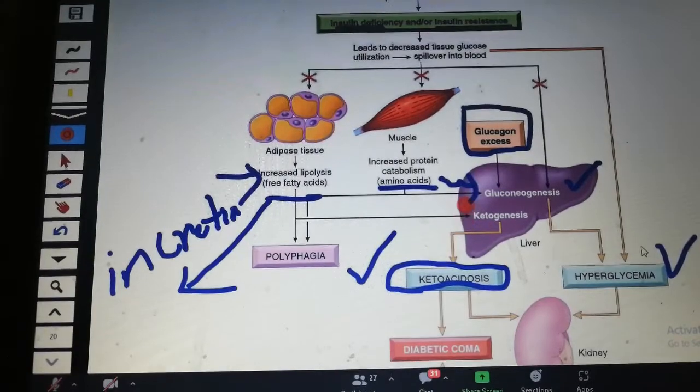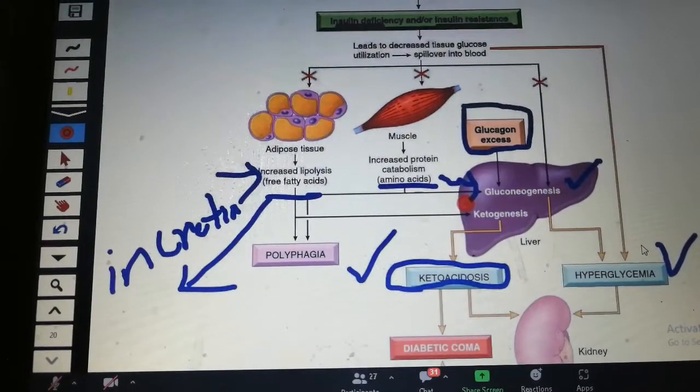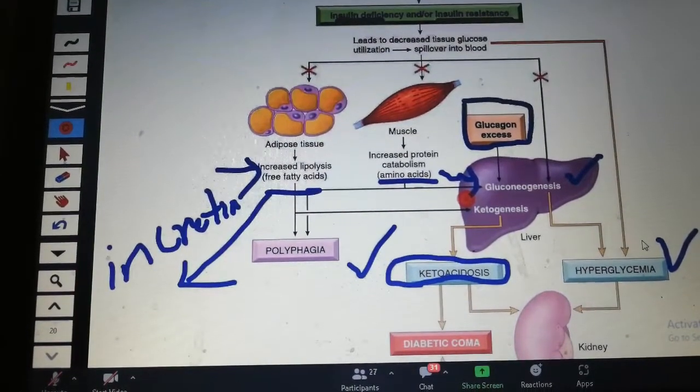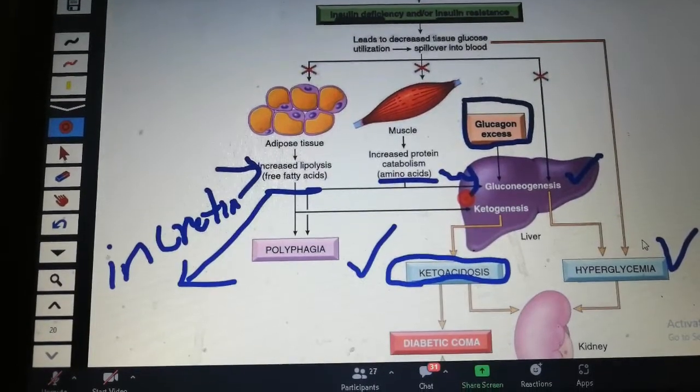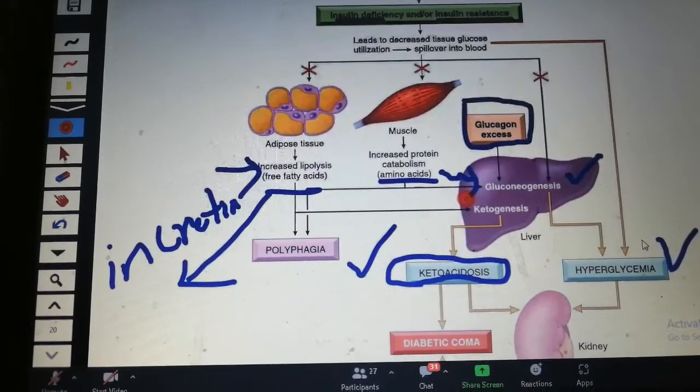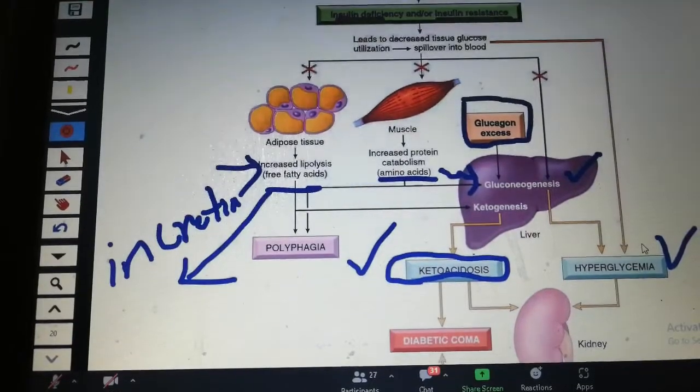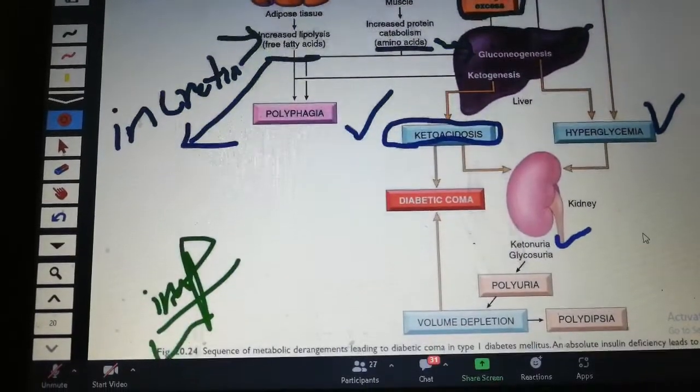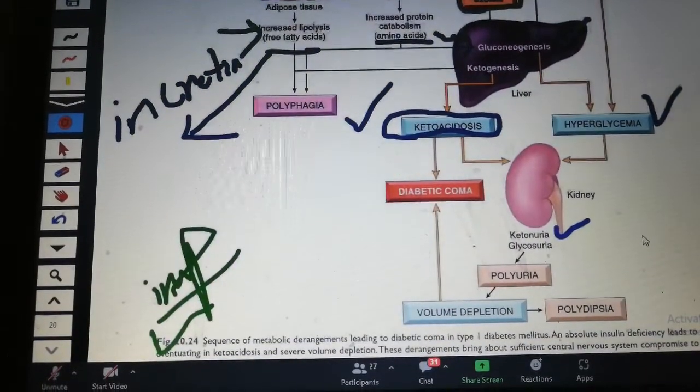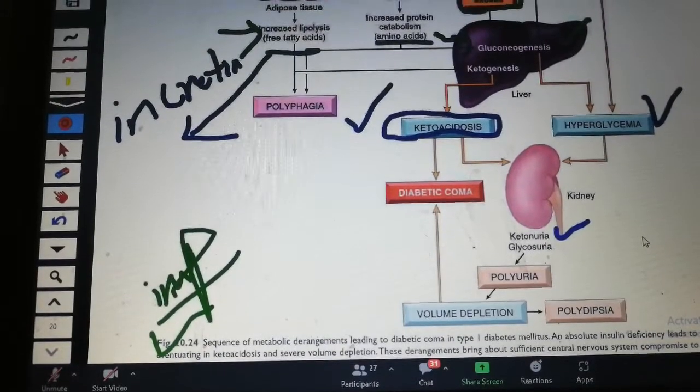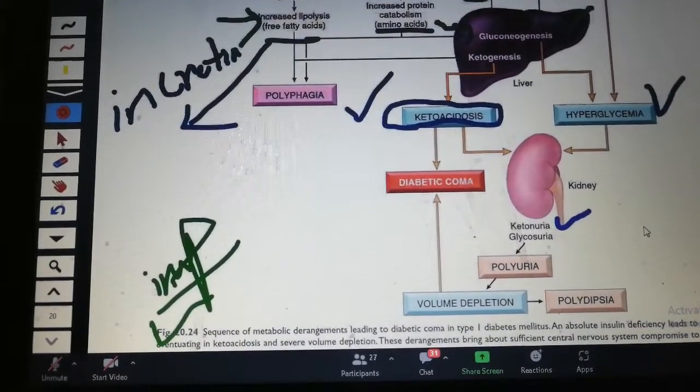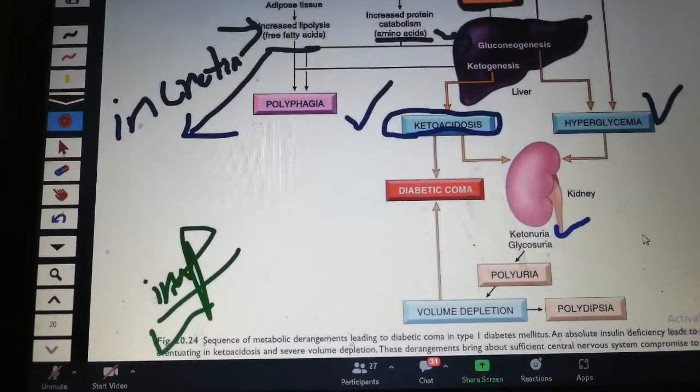In the liver, you know the ketone bodies. What are ketone bodies? We are talking about ketoacidosis. We have more of the ketone bodies: beta-hydroxybutyrate.